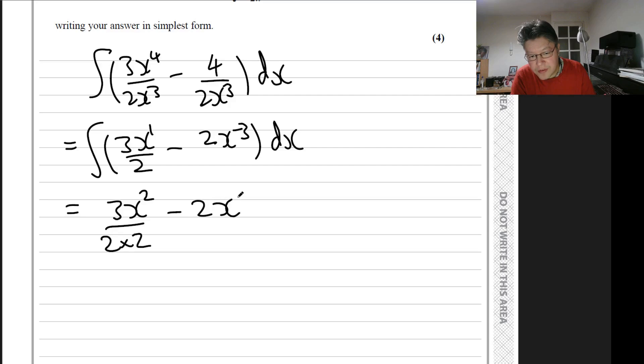minus 2x to the minus 2 over minus 2, plus c. Now we can simplify this, so that becomes 3 over 4 x squared plus x to the minus 2 plus c.